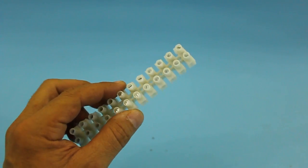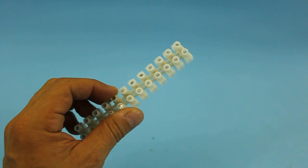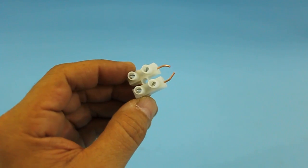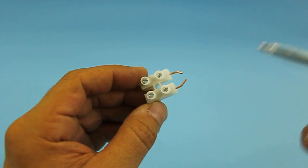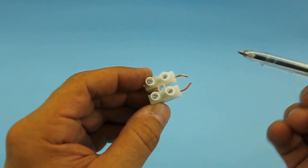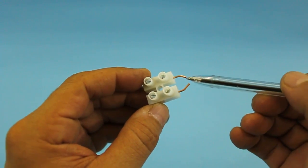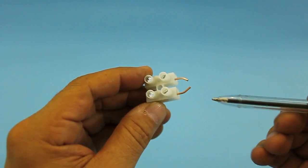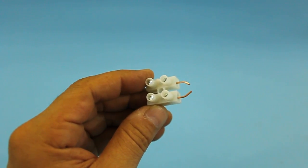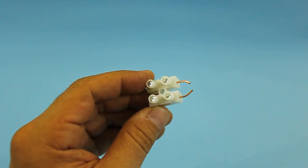I will use this terminal block to make a spark gap. Here it is. You just need to put two copper wires. The spark will jump between these two terminals, and you can adjust the distance simply by bending the copper wires.